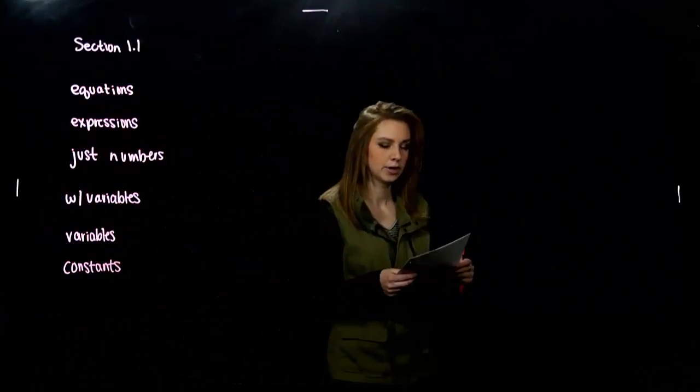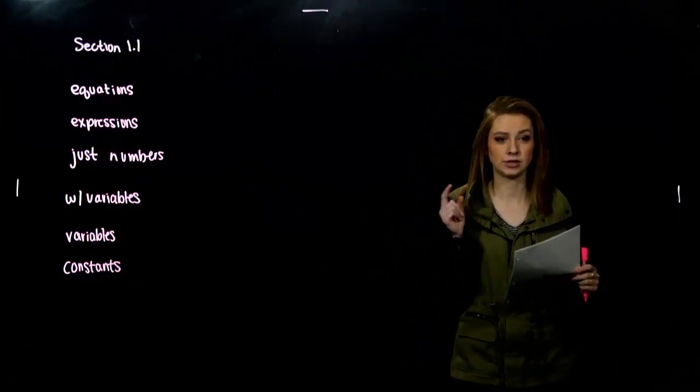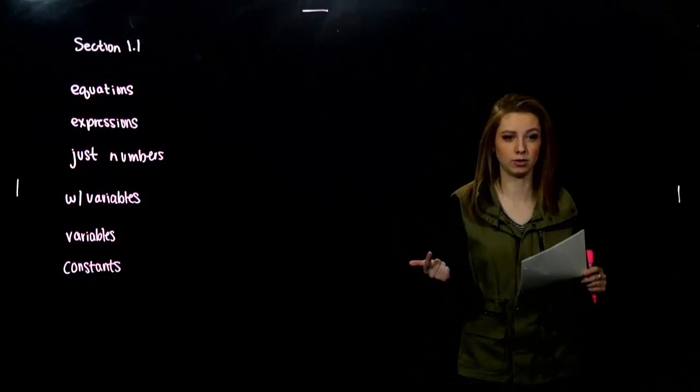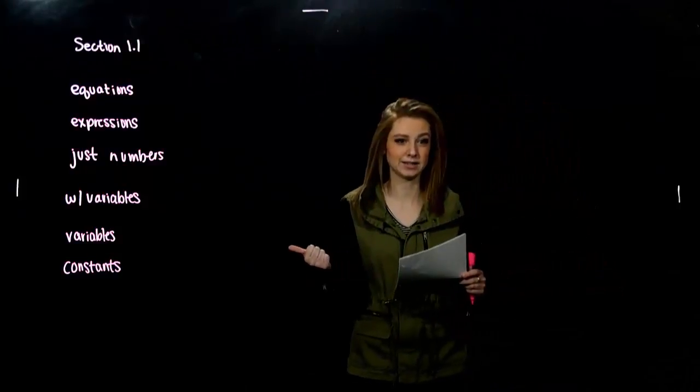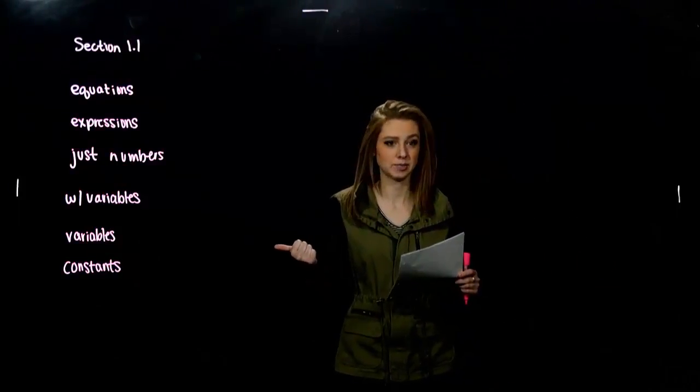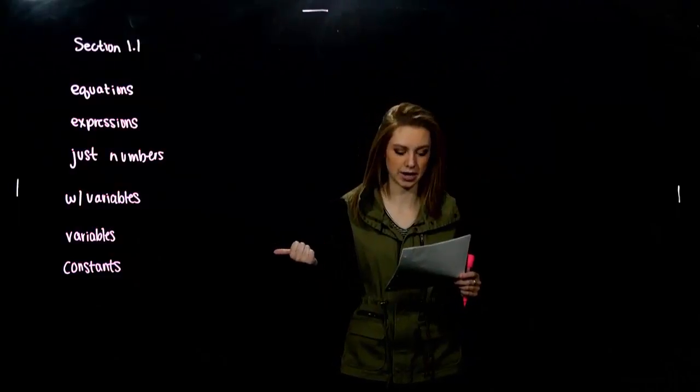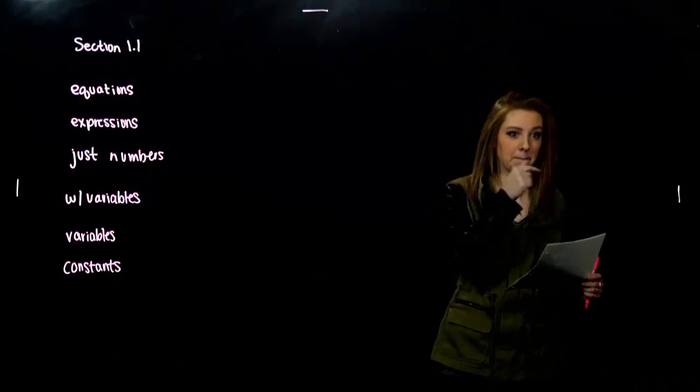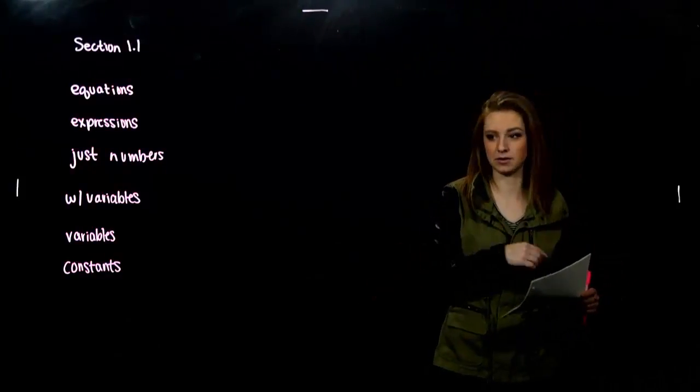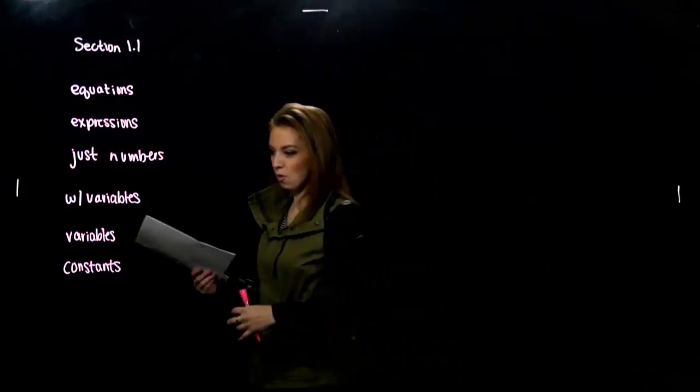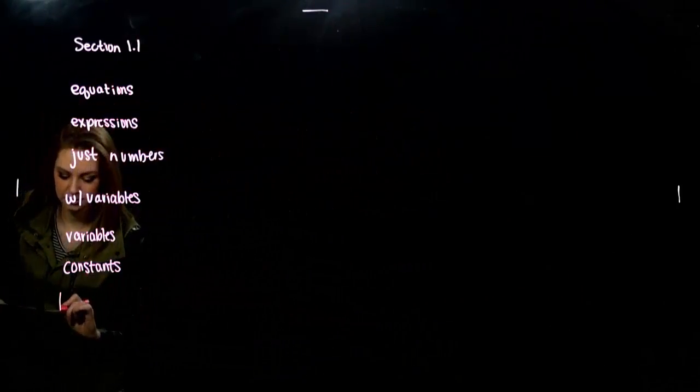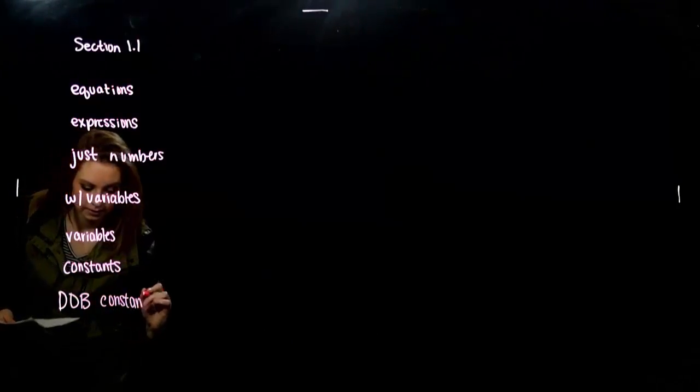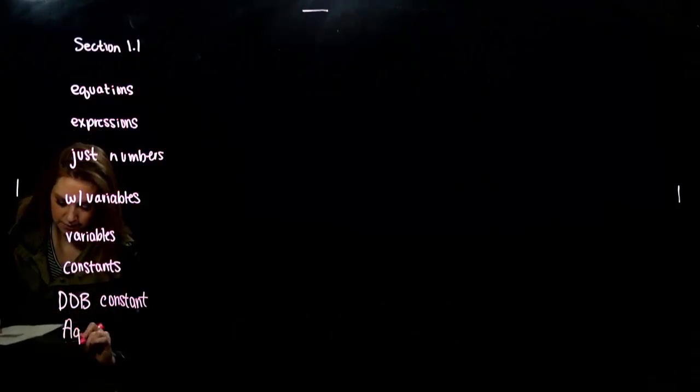So an example: your date of birth versus your age. One of them is a constant, one of them is a variable. The constant is your date of birth. It doesn't change. You were born at a specific day, at a specific time. But your age, my age right now, is different than right now. I've just gained another 20 seconds. So it's always changing, it's constantly dynamic. So your date of birth is constant.